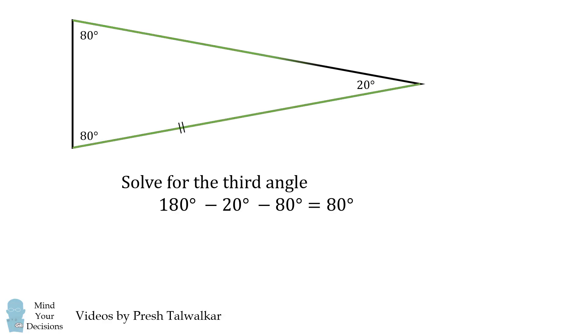so the sides opposite them will be equal. This will be an isosceles triangle. We'll put these sides in green to show that they have equal length.